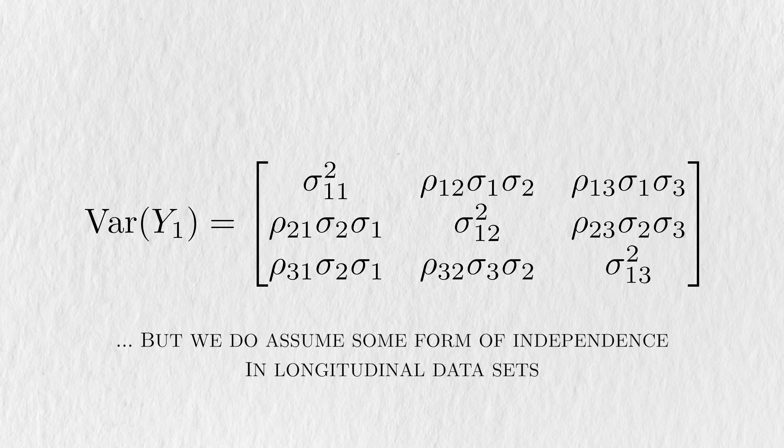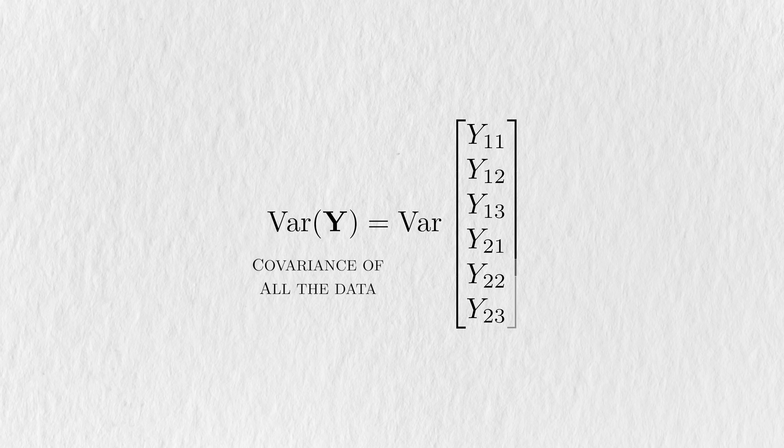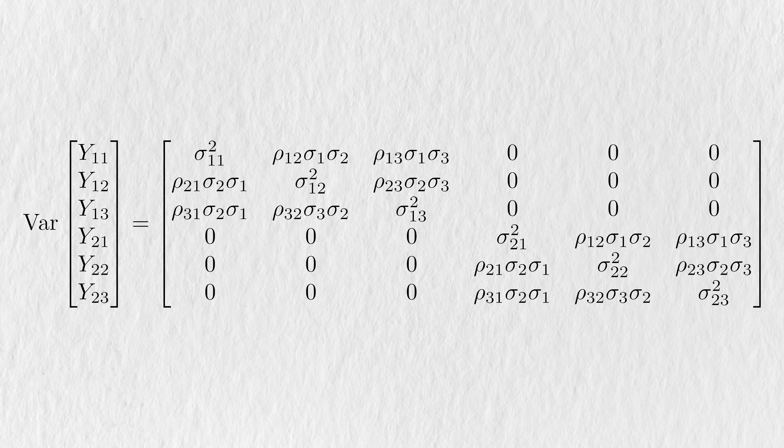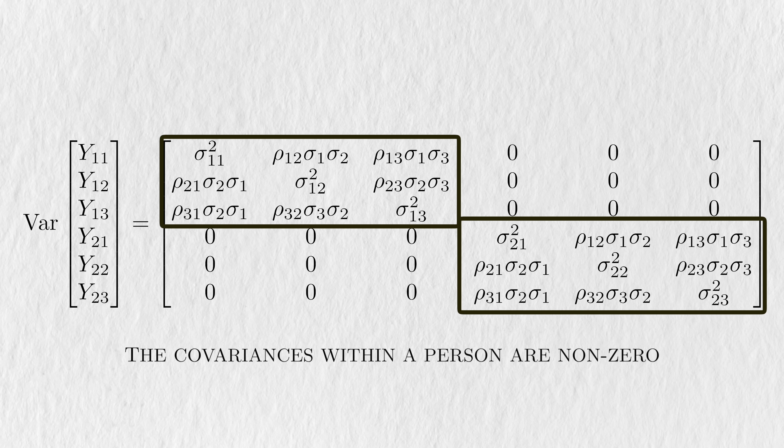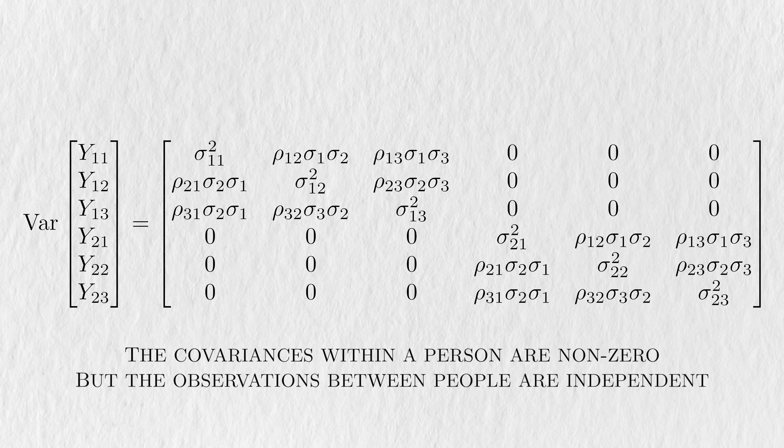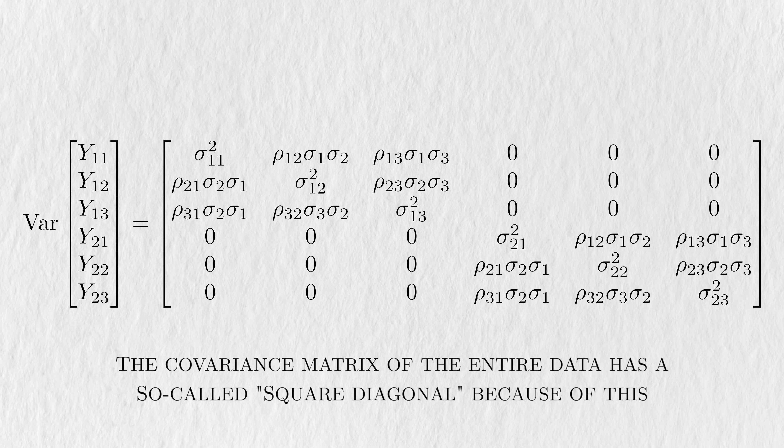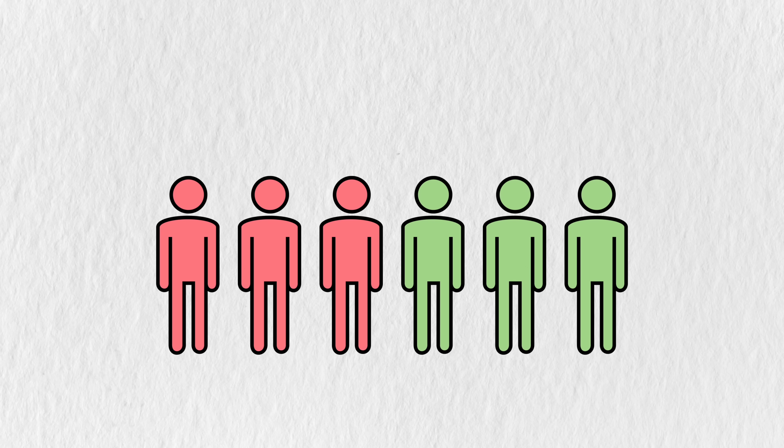That being said, we do assume some form of independence with longitudinal data. If we were to consider the overall covariance matrix of both people, we'll see that it takes on a particular form. The covariances within a person are non-zero, but we usually assume that the observations between people are still independent, meaning these particular covariances are still zero. This gives the covariance matrix of the entire dataset a so-called block diagonal. Now that you know more about longitudinal data and how to express it in notation, we can finally discuss a way to account for its particular characteristics.